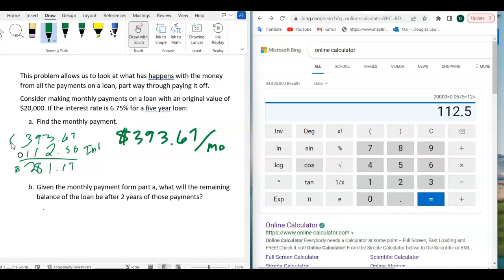So, $281.17 would go to the principal. So that means you would have in a loan, if you owe $20,000, the very first month, when you give them the $393.67, they're going to take $112.56 out of that. That's going to go towards interest.